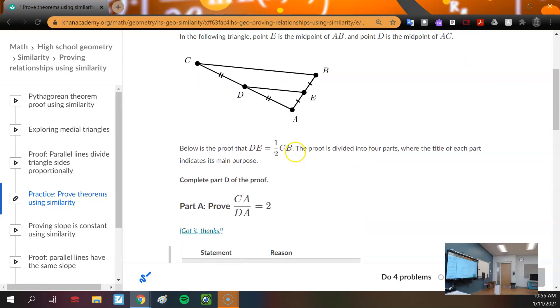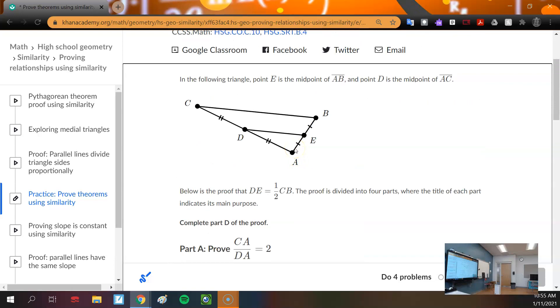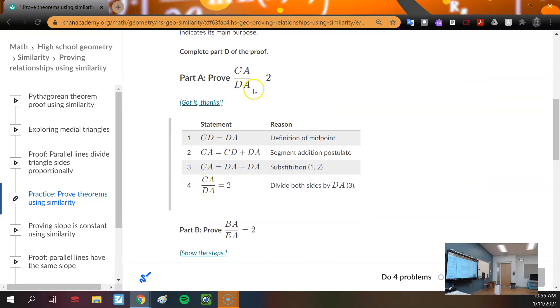But if we go back to the given, remember, all proofs have given information and then information that we derive from that given information. Part A and part B are the same thing. They're just proving that we have a ratio of 2.